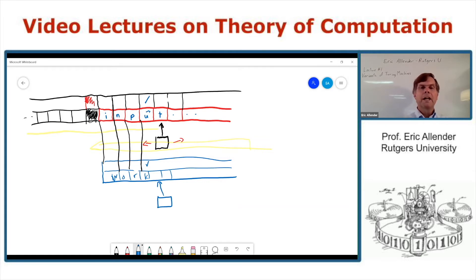So again, a very simple change and again perhaps not extremely interesting. So what's a more interesting variant of the Turing machine model?